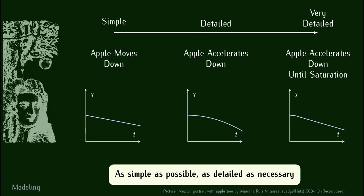Pour quelque chose de plus détaillé, si on fait des mesures plus précises, on se rend compte que la pomme accélère. Vous avez une trajectoire parabolique au lieu d'être rectiligne à cause de la gravité. Et si vous prenez encore plus de détails, vous pouvez vous rendre compte qu'il y a des frottements de l'air, et donc la pomme ne va pas accélérer indéfiniment mais elle va atteindre une vitesse limite — comme quand un parachutiste saute, il ne va pas accélérer indéfiniment, il va juste atteindre une vitesse limite.